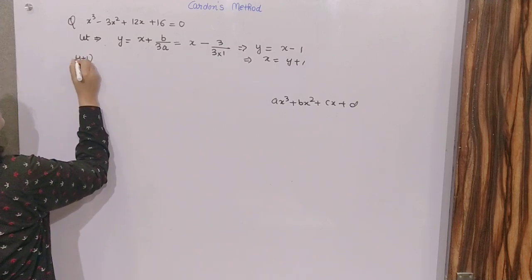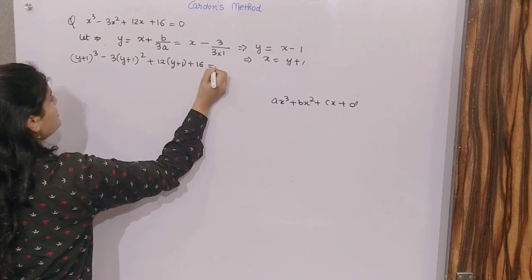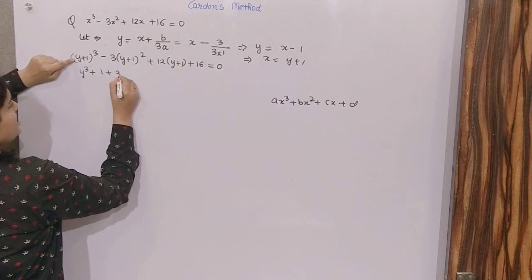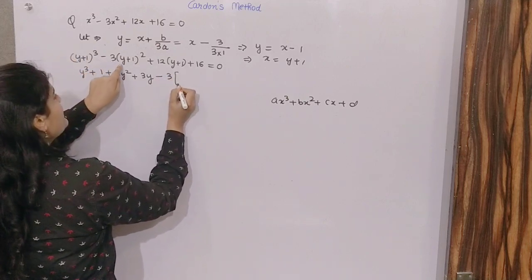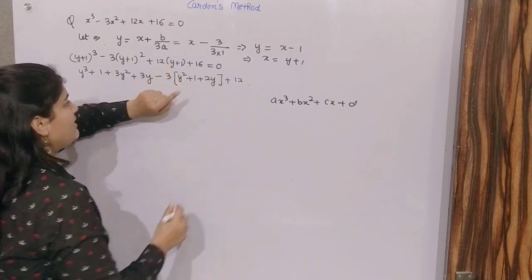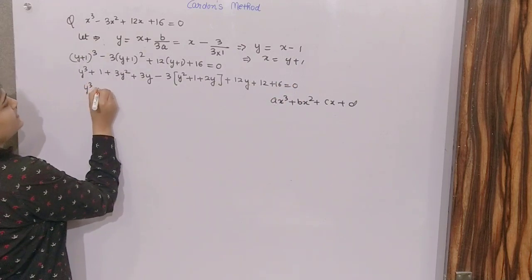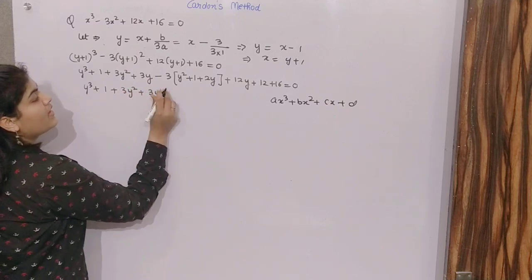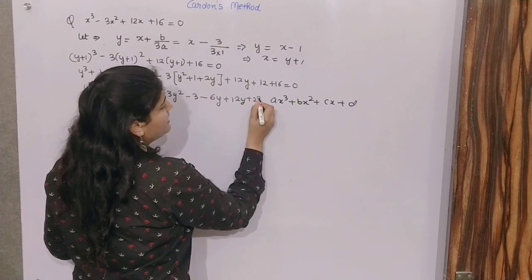So that means (y+1)³ minus 3(y+1)² plus 12(y+1) plus 16 equals 0. Open it up: (a+b)³ = a³ + b³ + 3a²b + 3ab², and (a+b)² = a² + b² + 2ab. Expanding gives y³ plus 3y² plus 3y plus 1, minus 3y² minus 3 minus 6y, plus 12y plus 12, plus 16 equals 0.